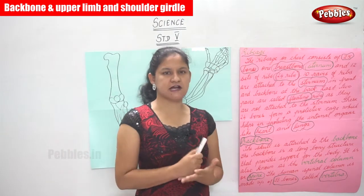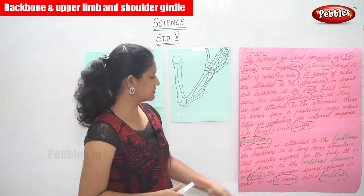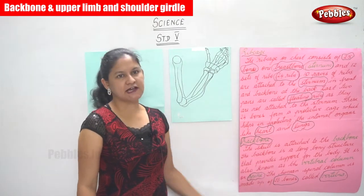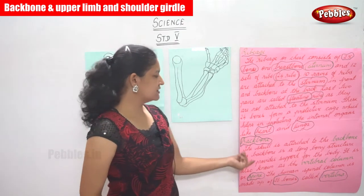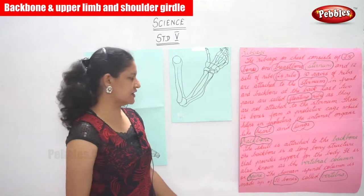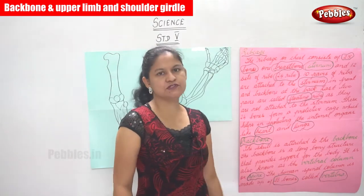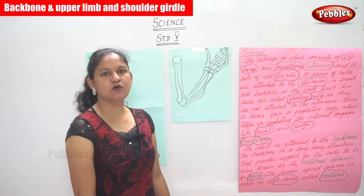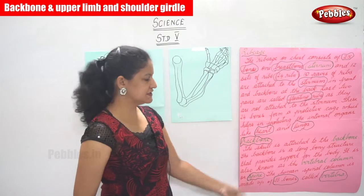The components of the skeletal system include the skull and the rib cage. Moving on to the backbone, we see that the skull is attached to the backbone. The backbone is a long bony structure that provides support for the body. It is also known as the vertebral column or spine.